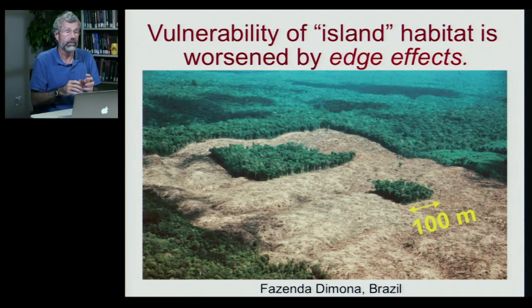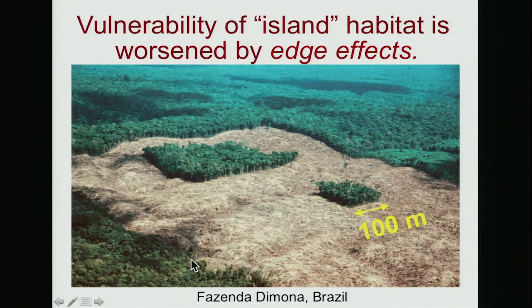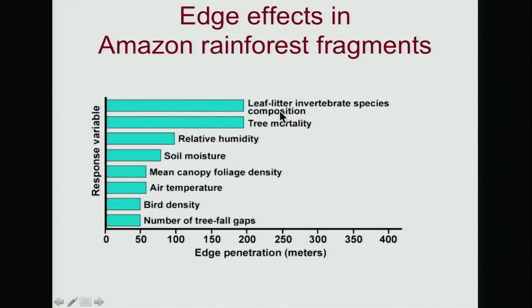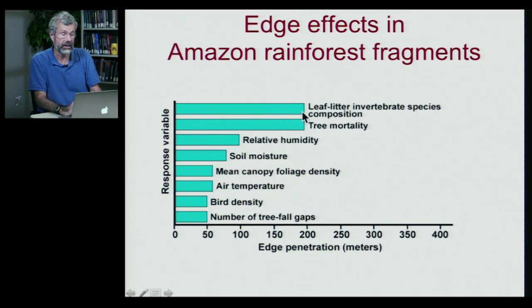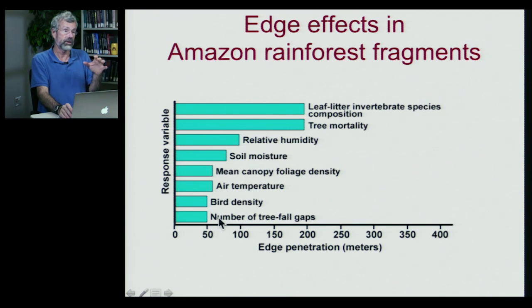These island effects often occur because of what are called edge effects. Where you once had a large intact spread of forest, you now have isolated fragments, and things can come in through the edges that might not otherwise affect the plants and animals that live there. In one example, cutting down trees to expose a forest fragment caused changes in invertebrate species in leaf litter 200 meters inside the edge. Trees themselves are more likely to die 200 meters within the edge, relative humidity is altered 100 meters from the edge inward, and soil moisture also varies. All of these things put more strain onto an isolated patch of rainforest.